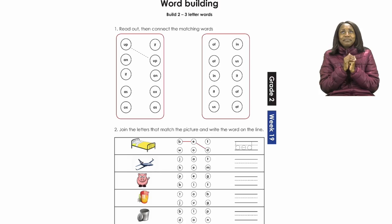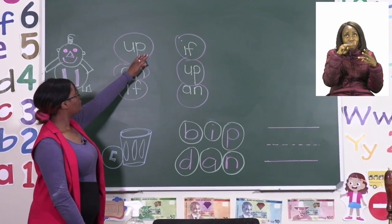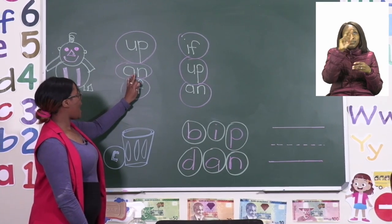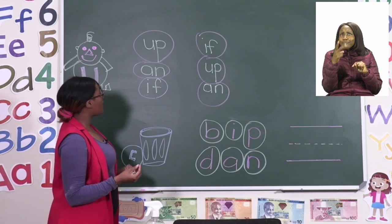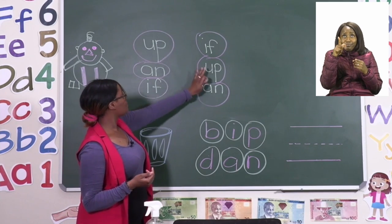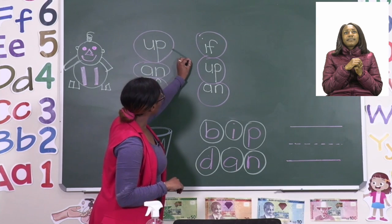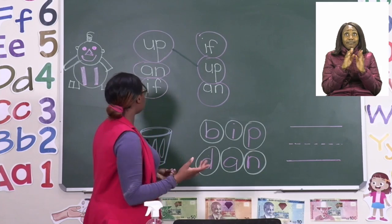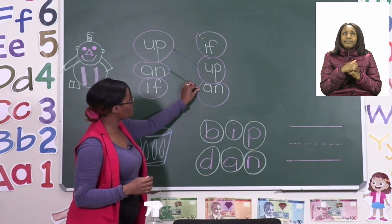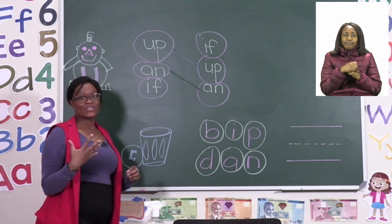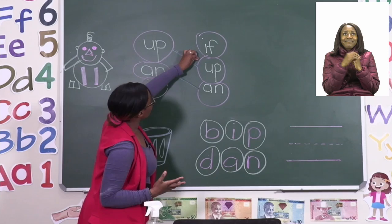Let's try and do at least three together. On the board I have three words: up, an, and if. I need to match them. I can see the word up, so I take my pencil and draw a line to match the two. The next one is an — I go and look for the word an and match them together. Then the last one we're going to do together is the word if — I draw a line from one word to the other.